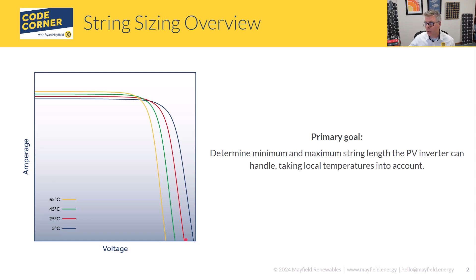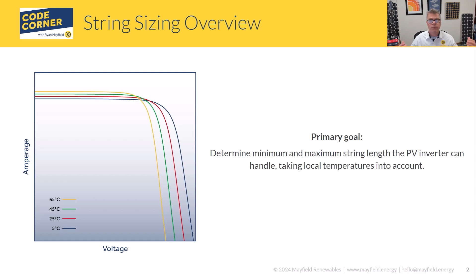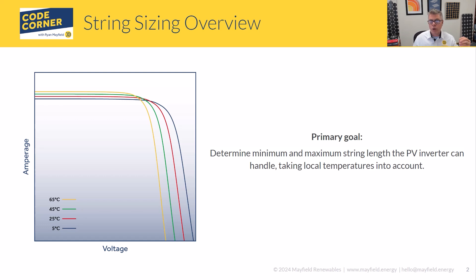On the flip side, as it gets colder, the module open circuit voltage increases. These are important aspects to know about because as you are sizing your strings, you need to look at two different things. You need to look at the open circuit voltage when it's really cold — middle of winter, sun pops up, array is cold — that voltage is going to be put onto the terminals of the inverter, and we need to know what that is. We also need to know in the middle of summer, when the array is operating at an elevated temperature, what that maximum power voltage is. So you're going to look at both sides of it.